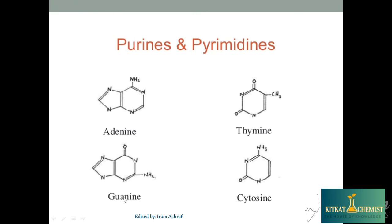Purines include Adenine and Guanine. Adenine has an amino group. Guanine's structure has a double bond oxygen and an NH2 group. Thymine's structure has two double bond oxygen groups.